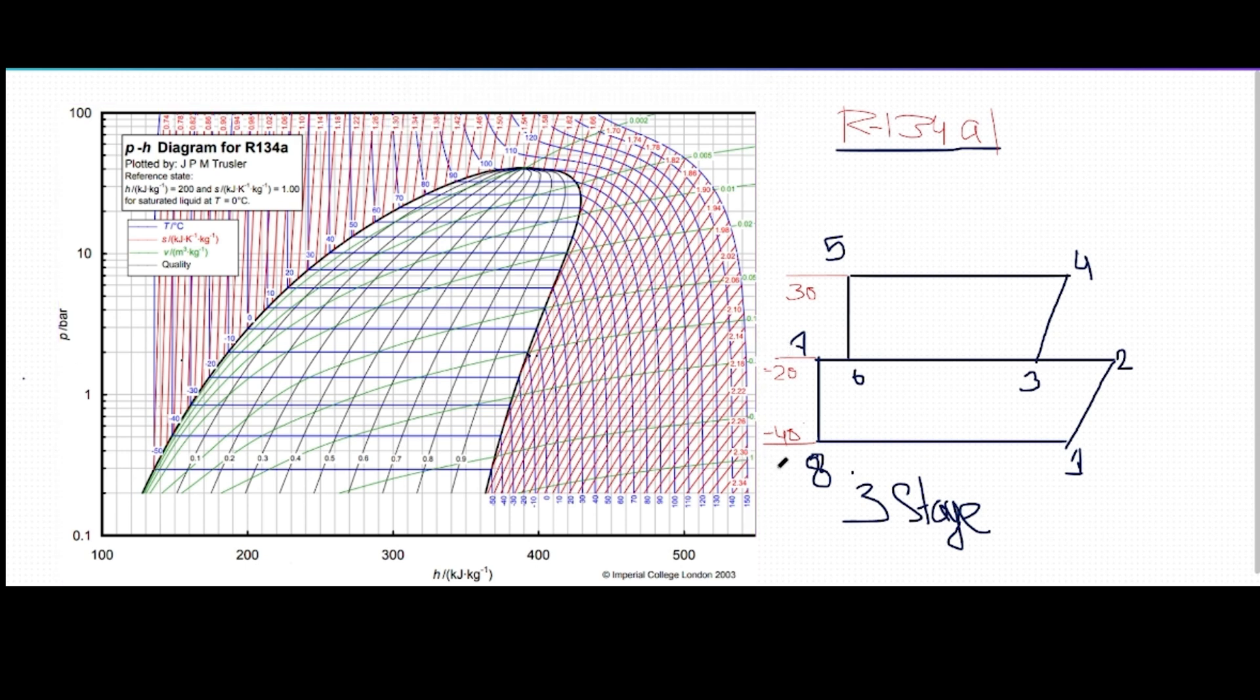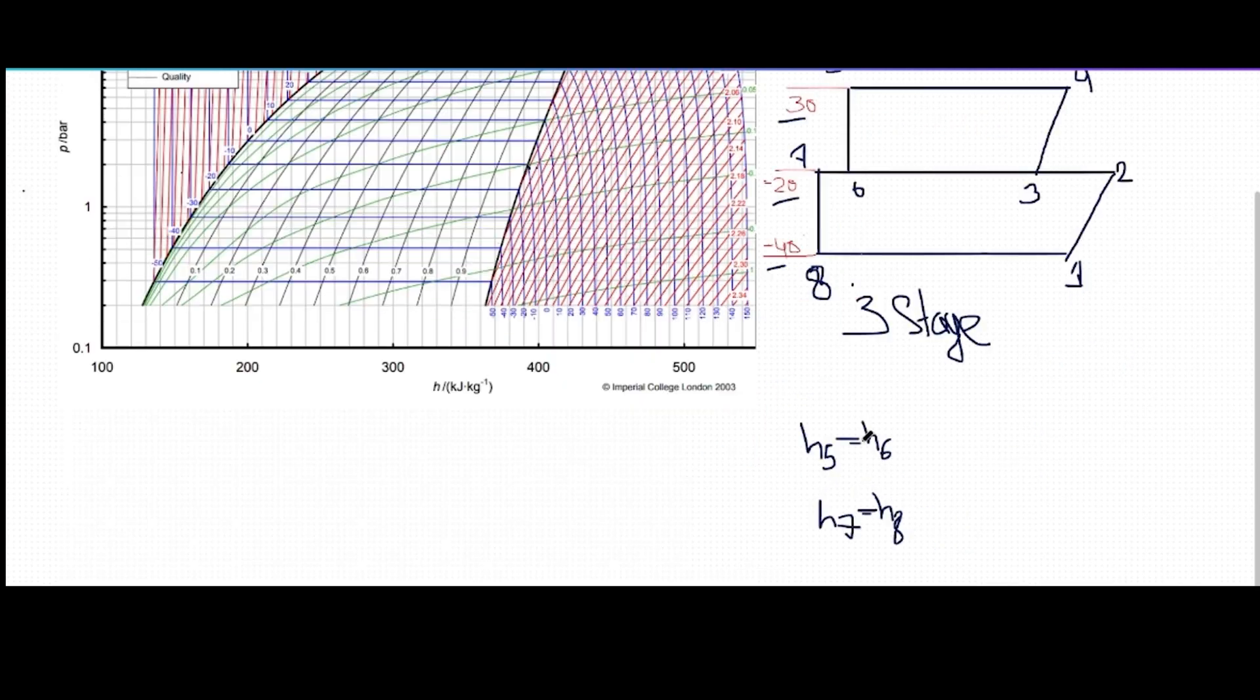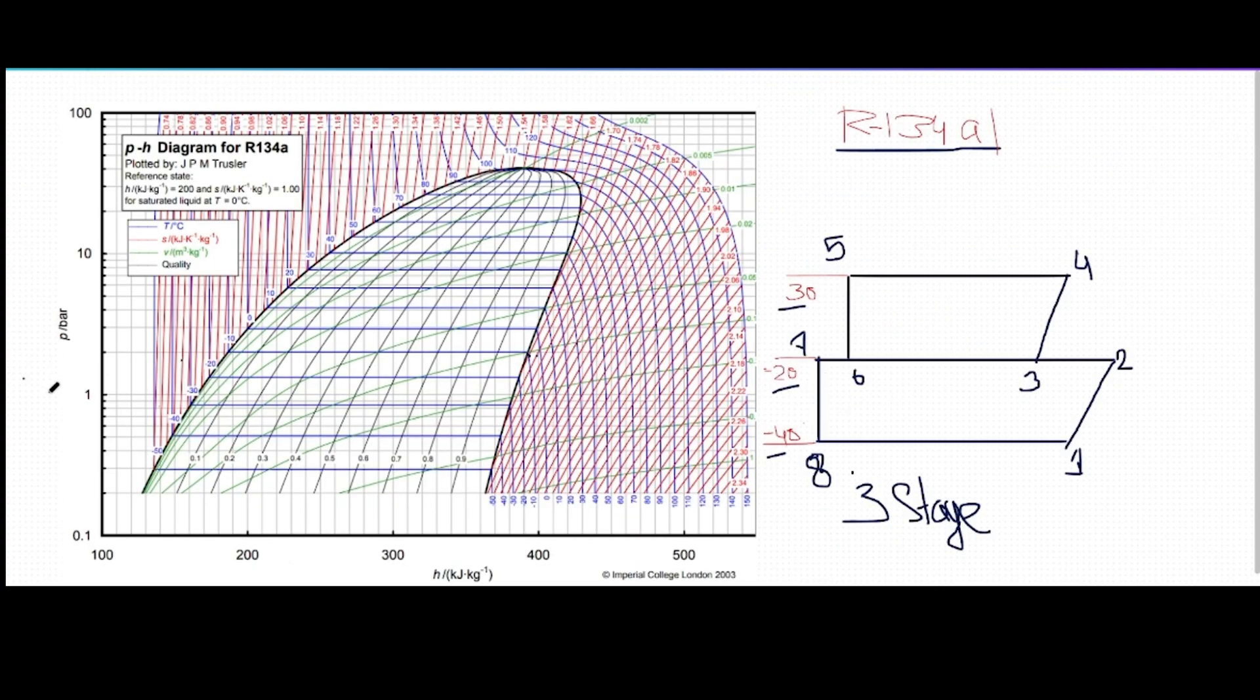R134a gas is very important. We have some temperatures: minus 40, minus 20, and 30 degrees Celsius. That will help us find the enthalpy of different criteria. h5 and h6 are both equal. Here is a Rankine cycle: 1, 2, 3, 4, 5, 6, 7, 8. h5 and h6 are the constant entropy, and h7 and h8 are the constant enthalpy lines.